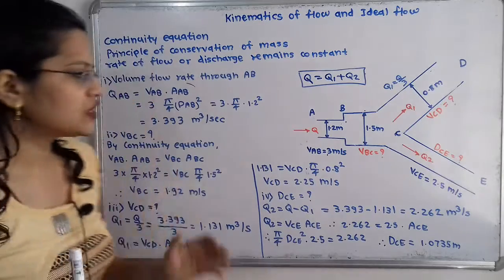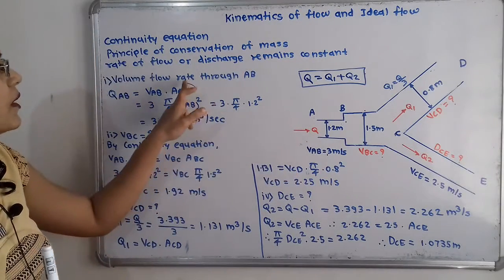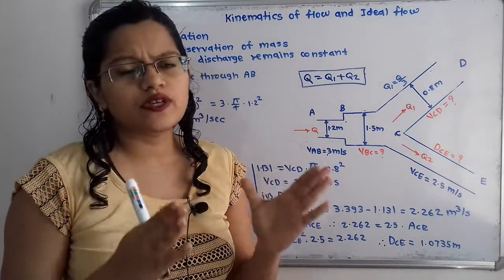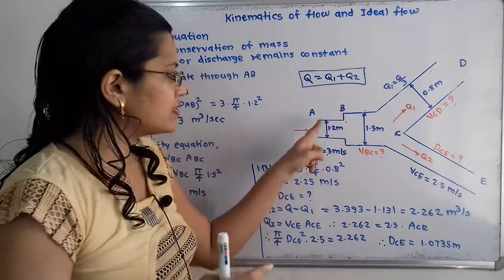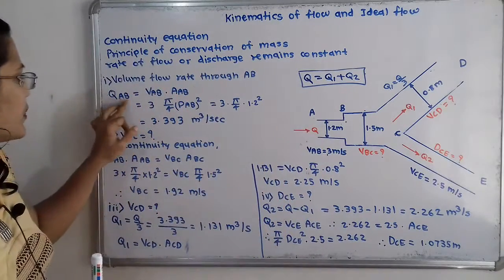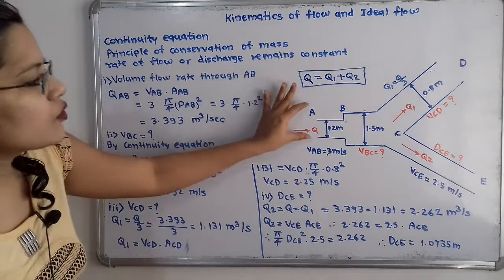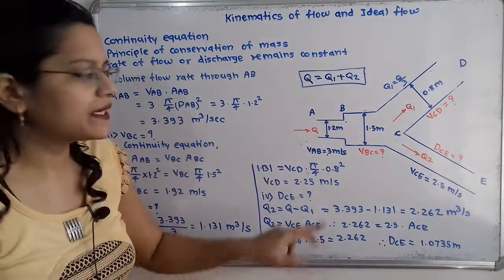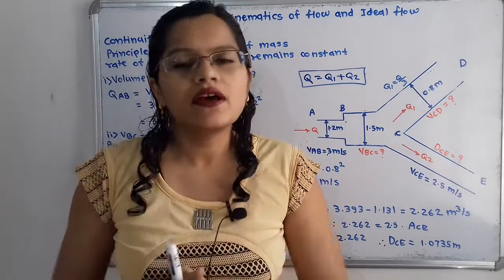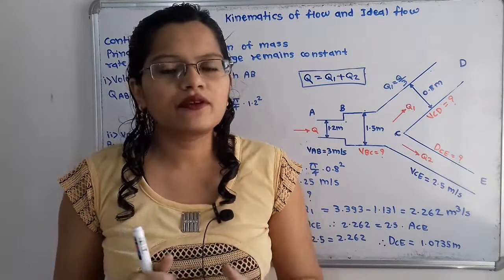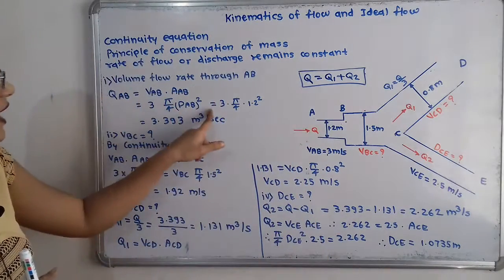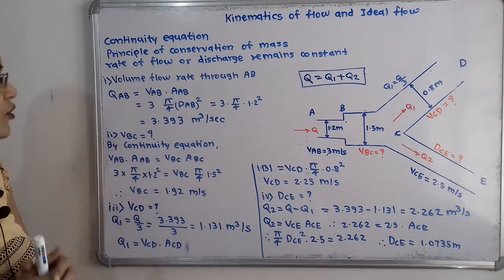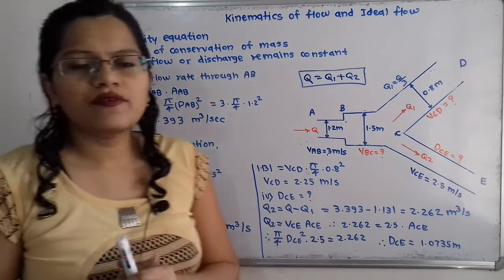The first question is to find the volume flow rate through AB. Volume flow rate Q equals V times A. So Q_AB equals V_AB times A_AB, where the area is pi by 4 times 1.2 squared. Putting in the values, Q_AB equals 3.393 meter cube per second.